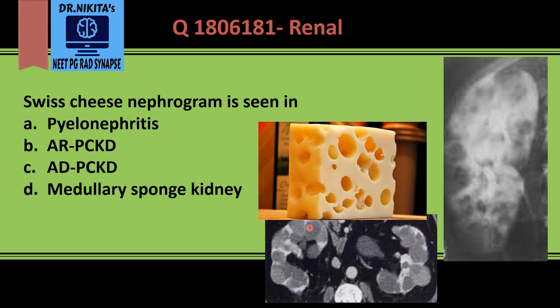On CT scan we see hypodense cysts that give a filling defect on the nephrogram. On this IVP image, within the kidney we see black areas — lucent areas — filling defects due to the cysts. So Swiss cheese means multiple holes, and multiple holes means multiple cysts in polycystic kidney disease.